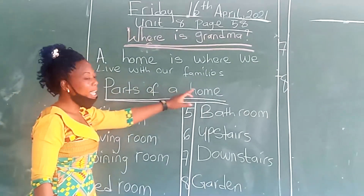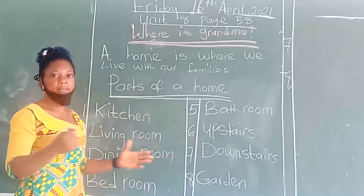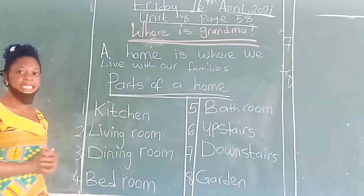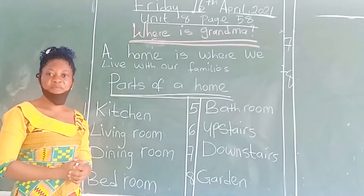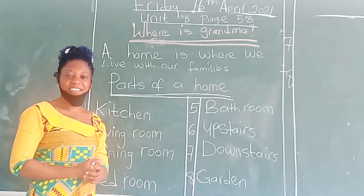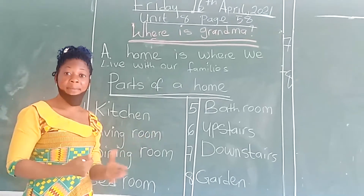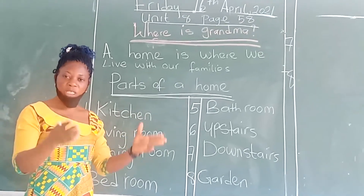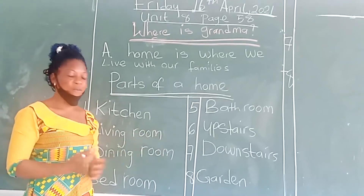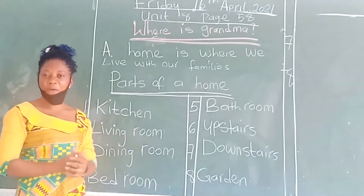Parts of a home. A home is made of different parts. The first part is the kitchen. This is the part of a house where mommy cooks food.